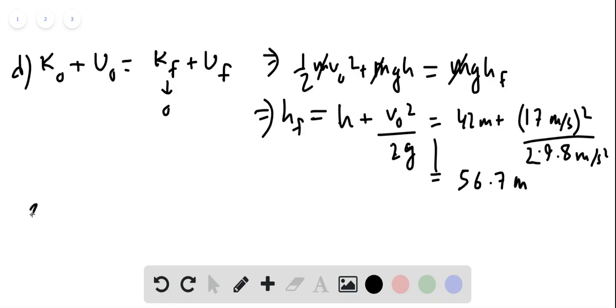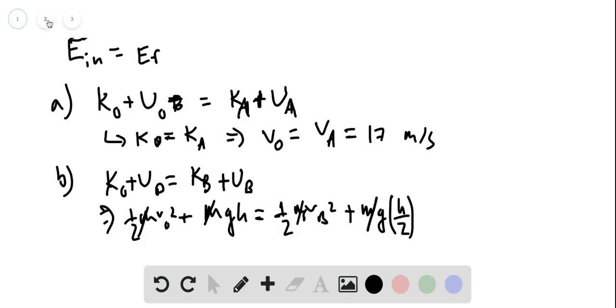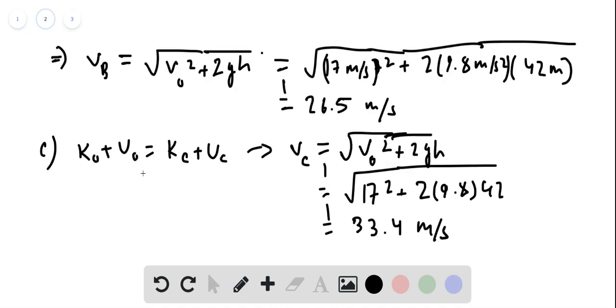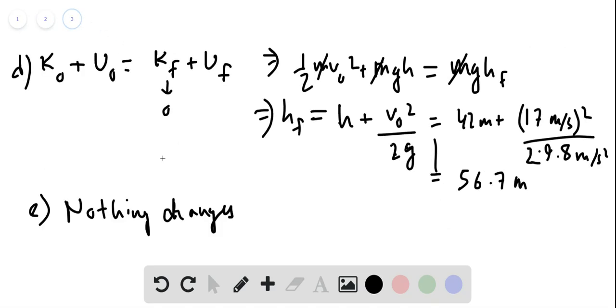And for part E, you're asked what happens if the mass is doubled. Answer is nothing changes, and this is because the mass, as you would have noticed, it doesn't factor into any of these equations. Part A, obviously the answer is the same, part B mass cancels out, part C mass cancels out, part D mass cancels out, so mass always cancels out and it never factors in.